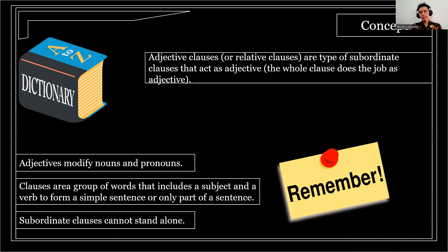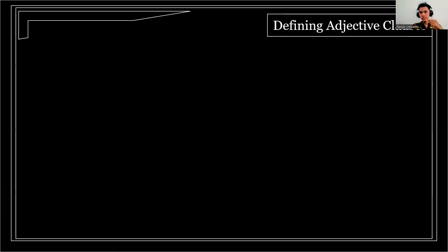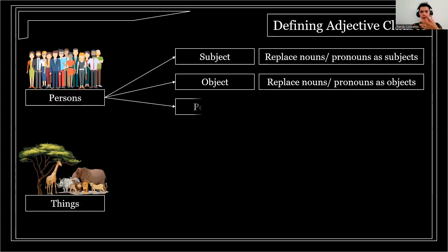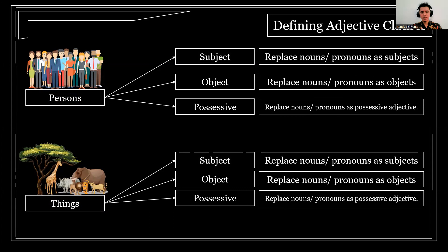Adjective clauses are types of subordinate clauses that act as adjectives — the whole clause does the job of an adjective. Remember that adjectives modify nouns and pronouns. Clauses are a group of words that include a subject and a verb. Subordinate clauses cannot stand alone. When you want to formulate an adjective clause, you need to write down a relative pronoun. Before going further, you need to be able to identify the subject and object of the sentence.